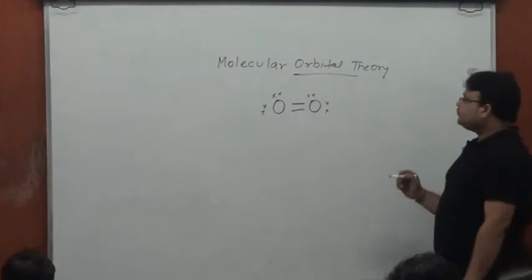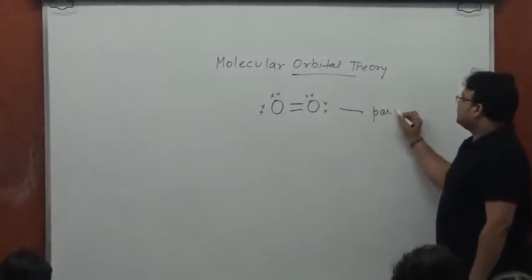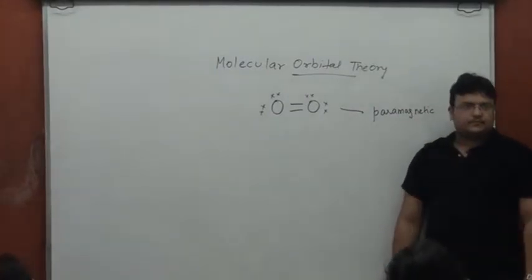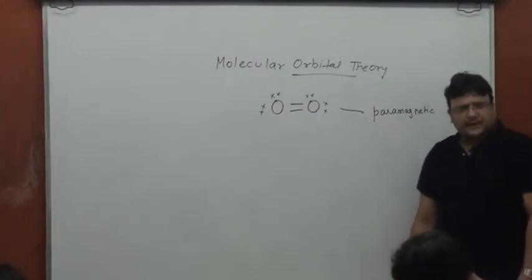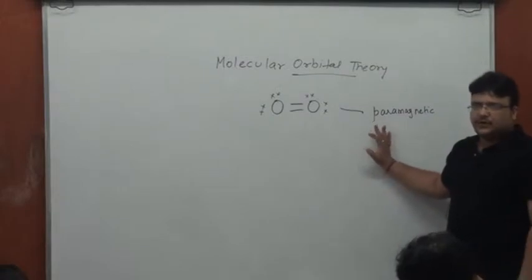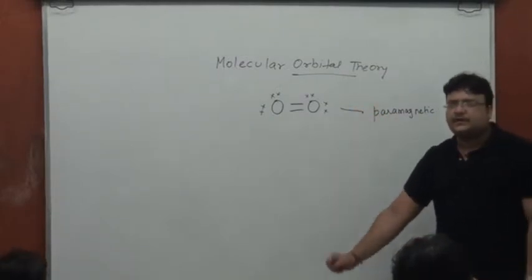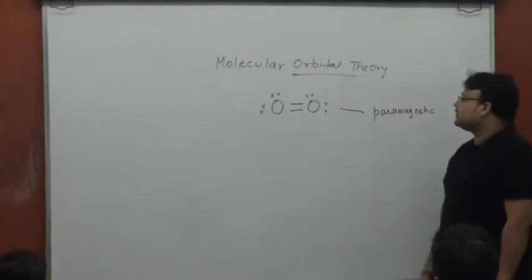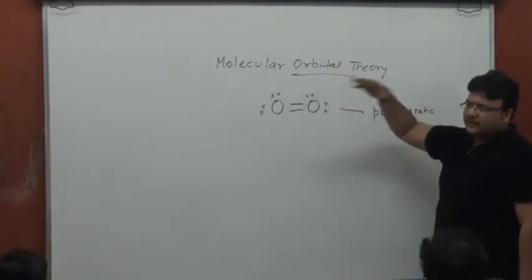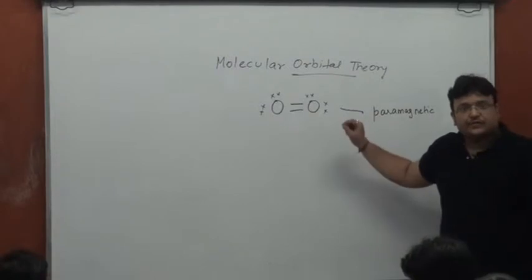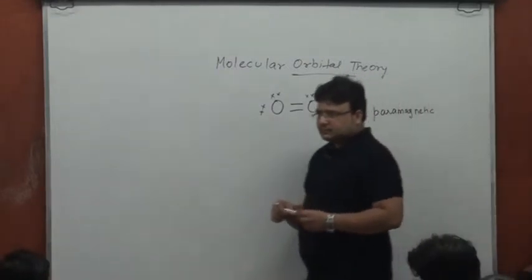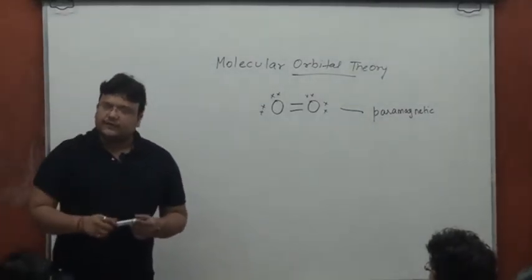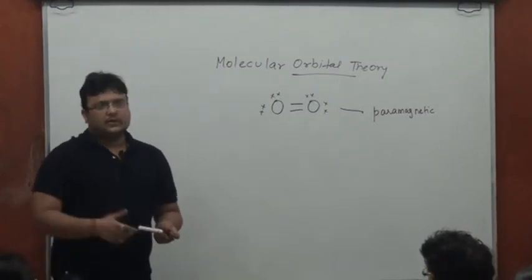Oxygen was expected to be diamagnetic, but it was found to be paramagnetic. This was baffling because with all electrons paired up, none of the theories studied until that point could explain the paramagnetic nature of oxygen. When oxygen was found to be paramagnetic, the need for a better theory was felt, and this is how we came to learn MOT.